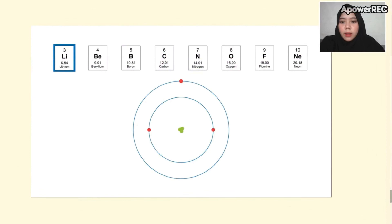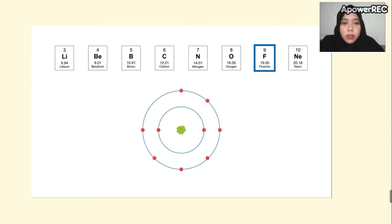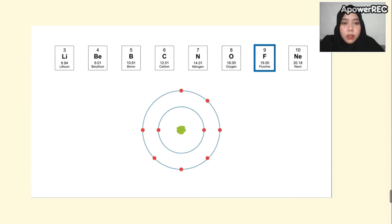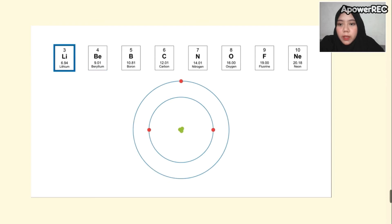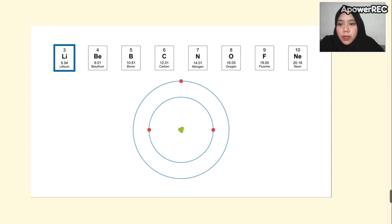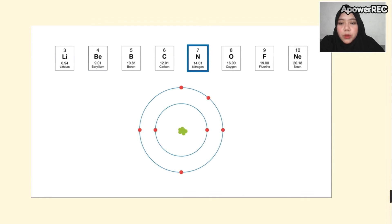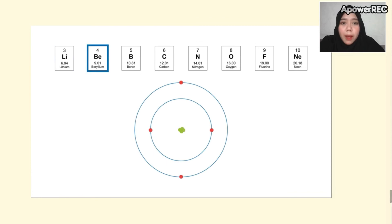We take the second period of the periodic table, starting from lithium to neon. Lithium has three protons and three electrons. As I move from lithium to neon, I'm adding more protons and electrons, and the attraction of electrons to the nucleus becomes greater and greater. You notice that neon is smaller than lithium — and this pattern holds for all elements across periods.